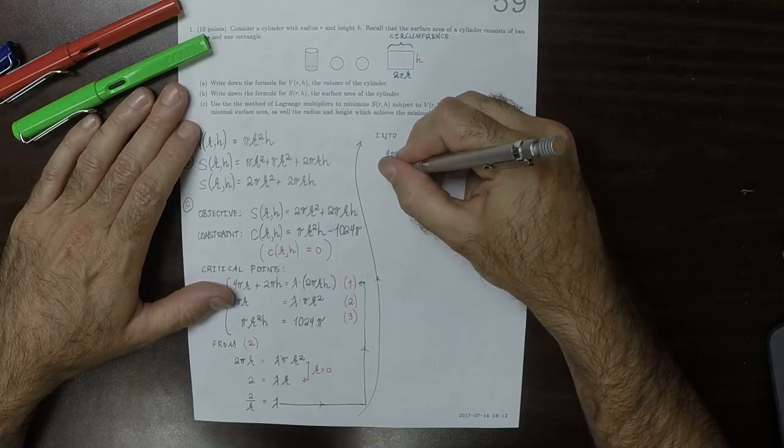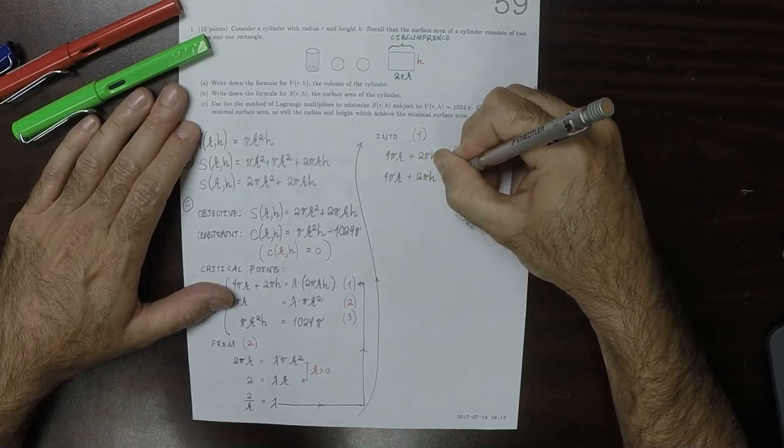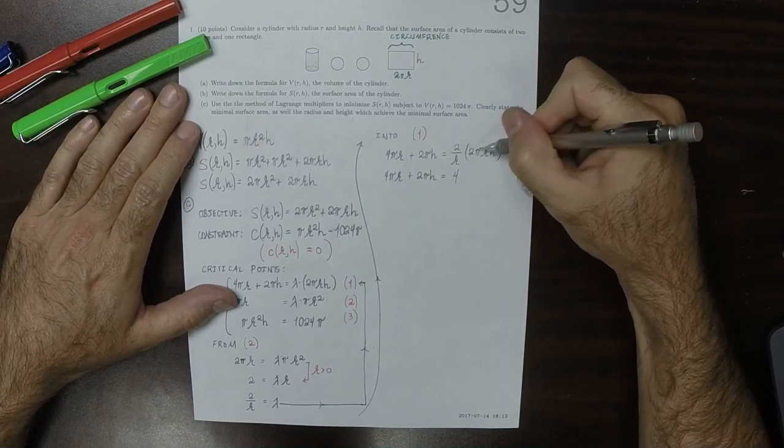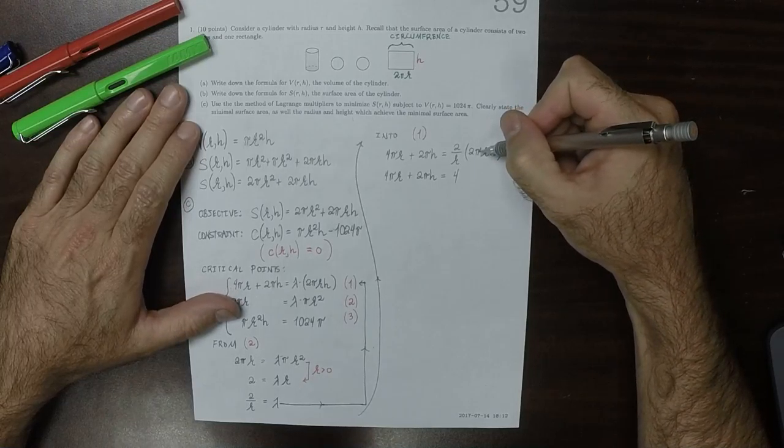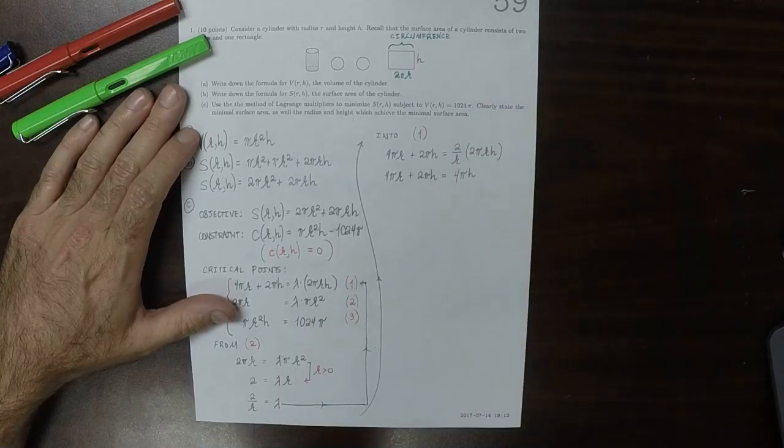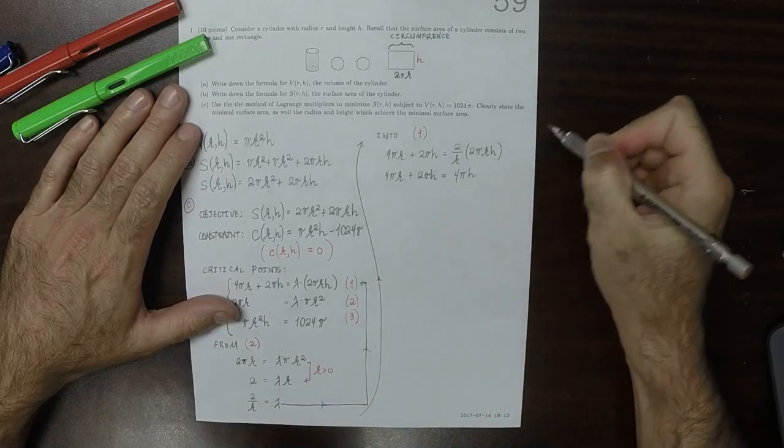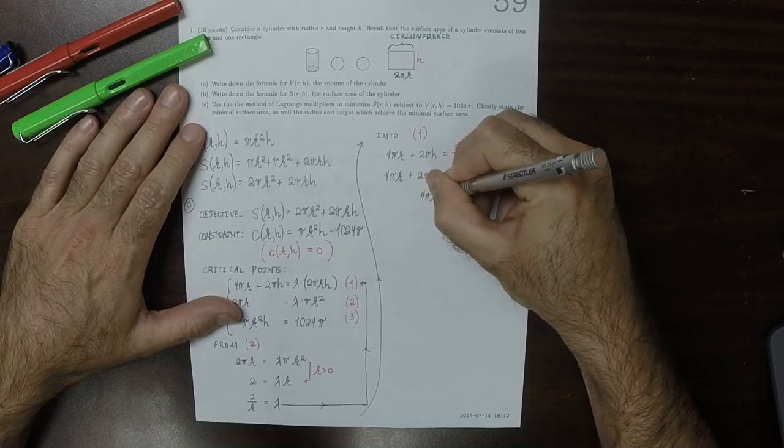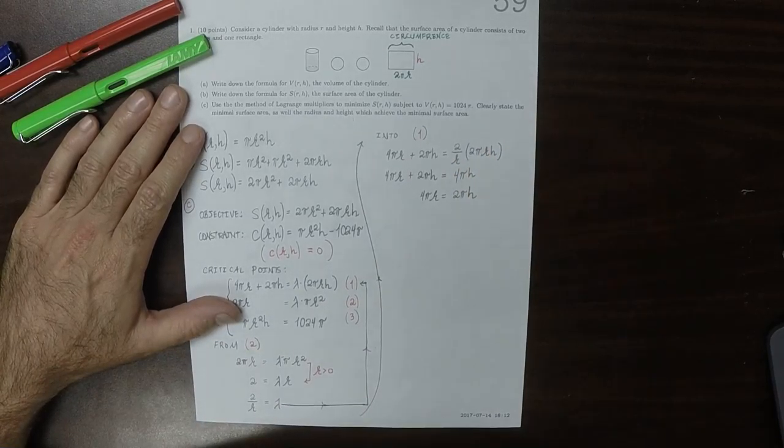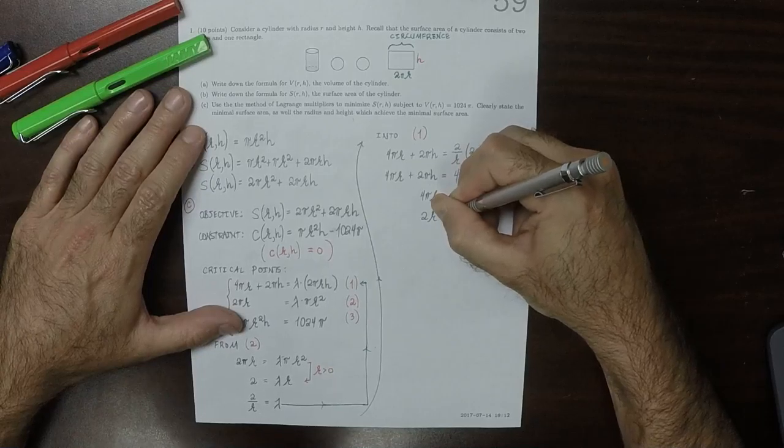Okay, so then the r's cancel. We get 4 pi r plus 2 pi h is, so, the 2's combined to make a 4. So the r's cancel and we get 4 pi h. I'll subtract 2 pi h from both sides. So 4 pi r is 2 pi h. Now we can divide both sides by 2 pi. So, 2 r is h.